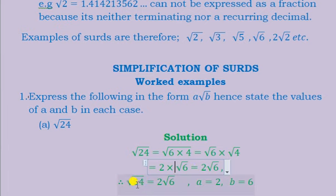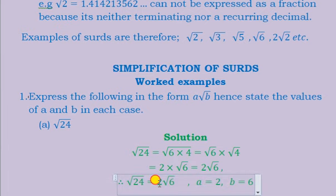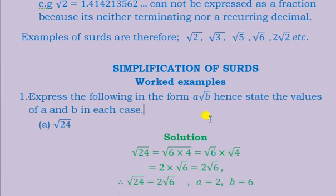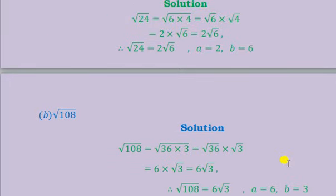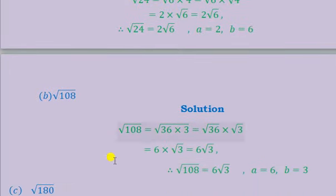We can now conclude that root 24 is the same as 2 root 6, where a equals 2 and b equals 6. We compare with the form a root b given in the question, so a corresponds to 2 and b corresponds to 6. We can proceed to part b: the square root of 108.